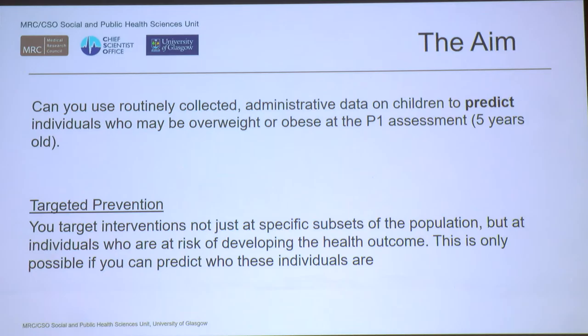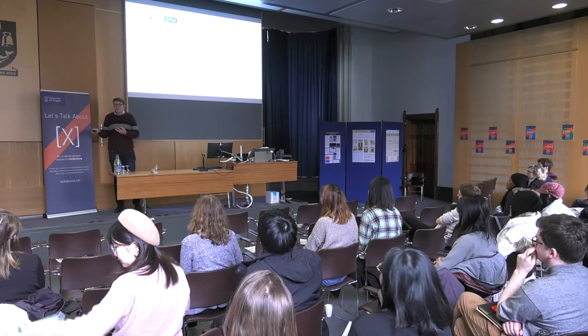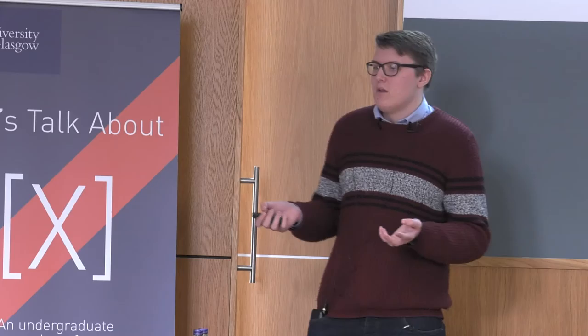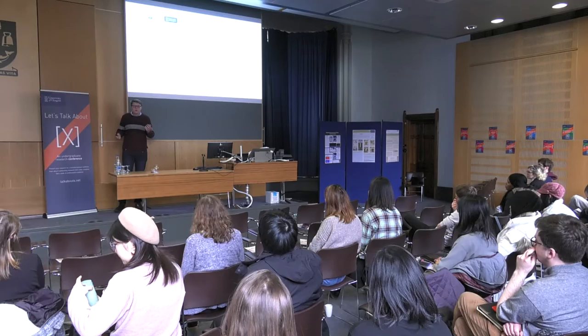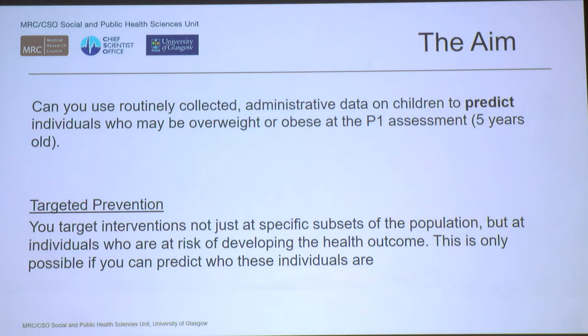This brings me to what I've researched. As a statistician, I work with data, and what we did was look at routinely collected administrative data — collected by doctors or health professionals — at a very young age, between zero and around 27 to 30 months. We wanted to use that data to predict which individuals might be at risk of being overweight at age five, at the P1 assessment. For a targeted intervention, you need proof that the people you're targeting are actually the right people.